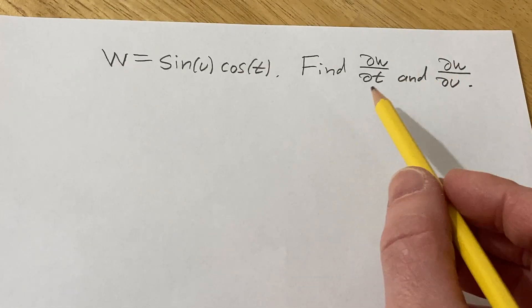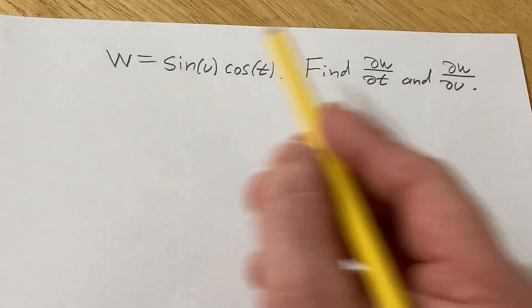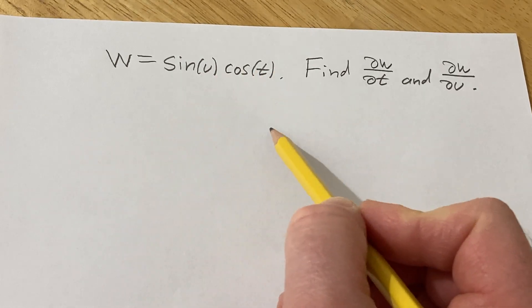Hello, in this video we're going to find some partial derivatives. We have w equal to sine of u times the cosine of t.